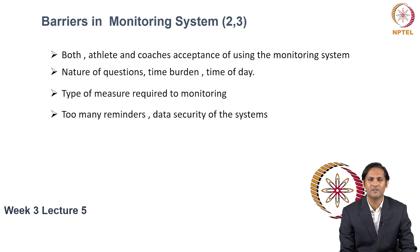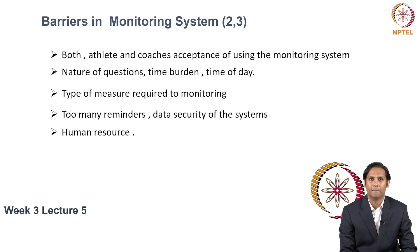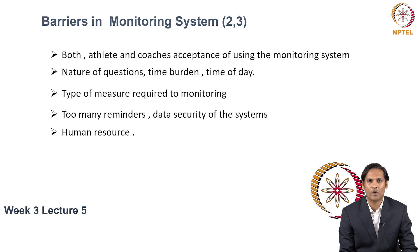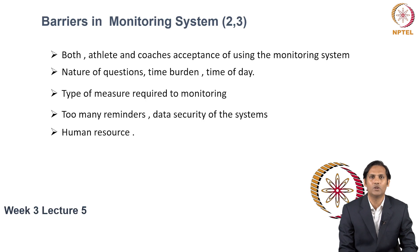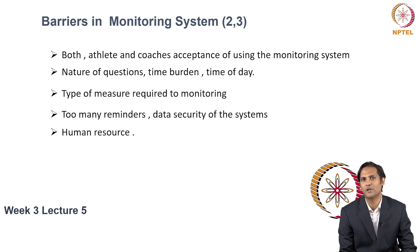Another barrier in using an athletic monitoring system is too many reminders given to athletes, or concerns about data security of the system itself. Because there are multiple tasks to be performed in an athletic training environment, an additional human resource is required to implement the athletic monitoring system. If you do not have the human resource to implement it, even if you have a system, it would not be fully utilized, and you would not be able to get interpreted data for coaches or athletes to analyze.